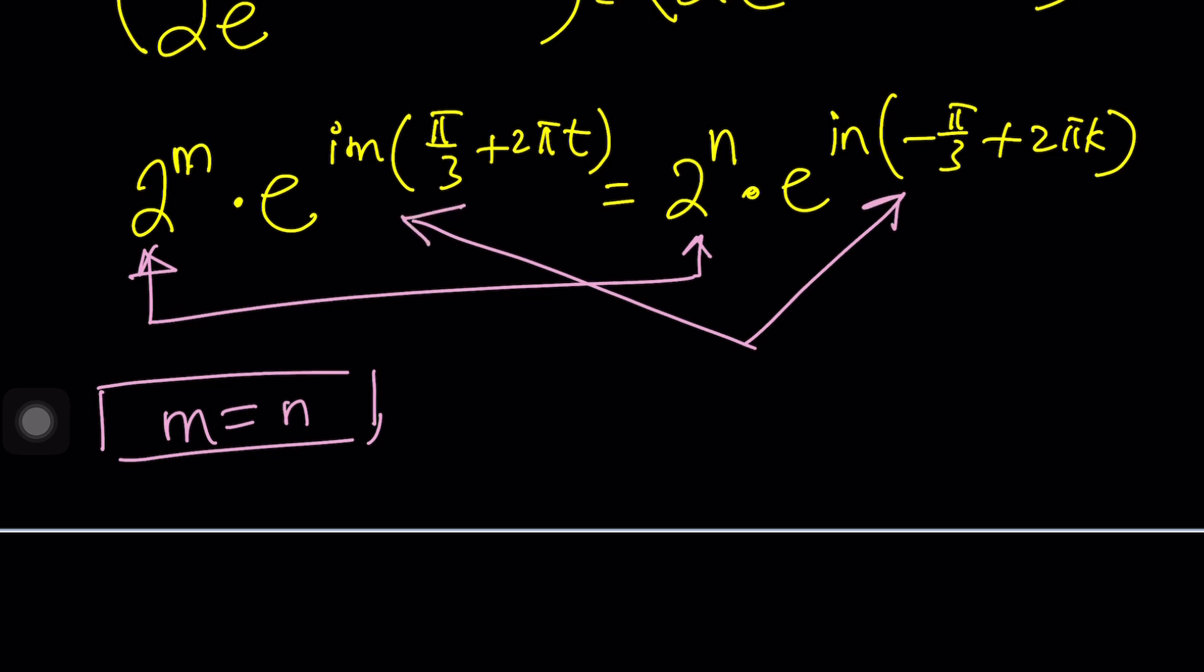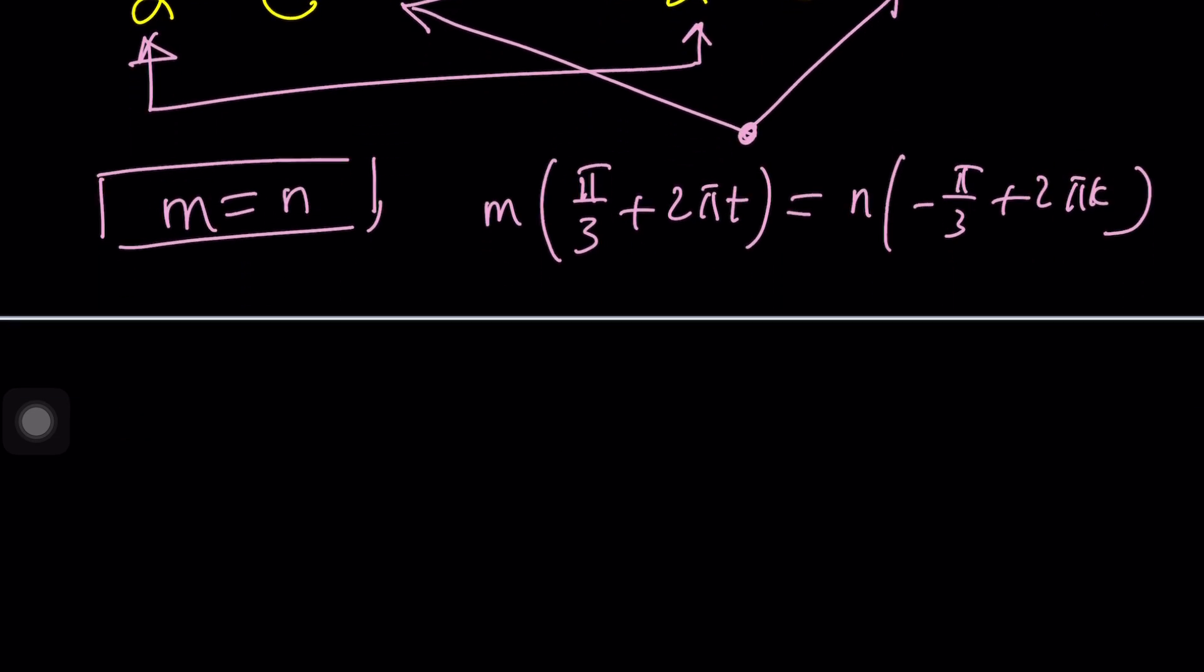And then we get this another equality. And that gives us the following. The i cancels out so we can write this as m·(π/3 + 2πt) = n·(-π/3 + 2πk). And of course we can go ahead and distribute or multiply both sides by 3 first maybe, right?